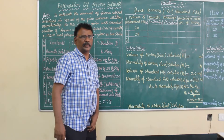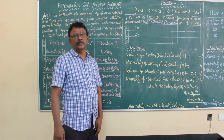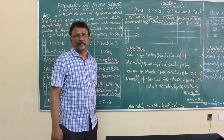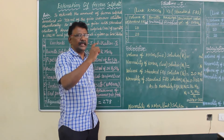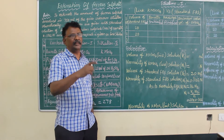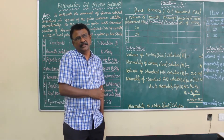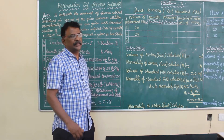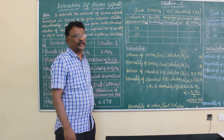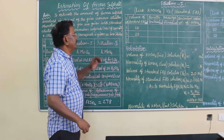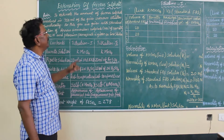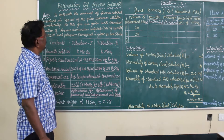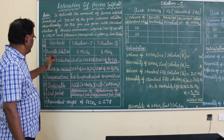Volumetric analysis is classified into two types: one is called acidimetry and another one is called permanganometry. Acidimetry is what we have already done in 11th standard practicals. In 12th standard we are doing permanganometry — we take potassium permanganate in the burette and use it to estimate the ferrous sulphate present in the solution.